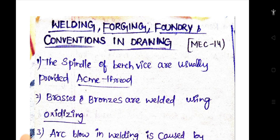We are going to cover welding, forging, foundry and conventions in drawing. Total 14 marks. For these 14 marks, if you lose the chances, you are going to lose 100 marks, 100 ranks. That's why you should be prepared at this time. This video is very useful, so try to grab this advantage.